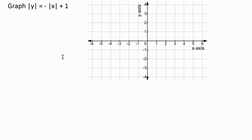We are given the equation: the absolute value of y is equal to the negative of the absolute value of x plus 1. You might be thinking that since we have absolute value on both sides of the equation, this problem will be hard. But first, let's break down what absolute value actually means.